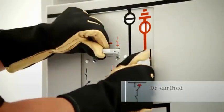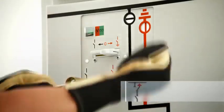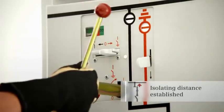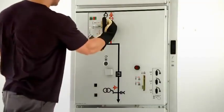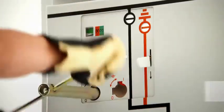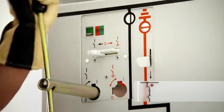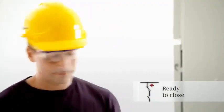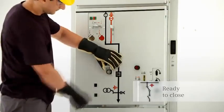The three position disconnector can then be switched from the ready to earth position to the open position and then to the closed position. The feeder is re-energized by closing the circuit breaker.